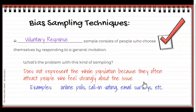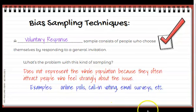Examples of voluntary response samples include online polls, call-in voting, and email surveys — anything where someone chooses themselves for the survey.